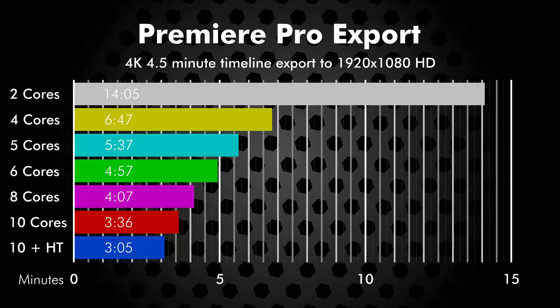This second graph is the length of time in minutes for export by core count. Jumping from 2 cores to 4 cores results in a significant performance improvement. Core counts above 4 have diminishing returns that are relatively constant. If we assume that each hyperthread results in approximately 25% to 30% of 1 core in throughput, the 10 core plus hyperthread would be the equivalent of approximately 13 cores.